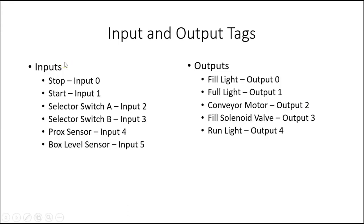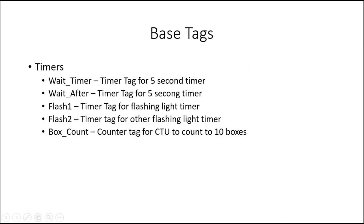Here are the inputs and outputs for our program. Inputs: Stop on input 0, Start on input 1, Selector Switch A on input 2, Selector Switch B on input 3, Proc Sensor on input 4, and Box Level Sensor on input 5. Outputs: Fill Light on output 0, Full Light on output 1, Conveyor Motor on output 2, Fill Solenoid Valve on output 3, and Run Light on output 4.